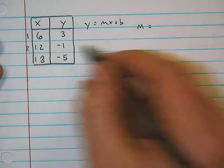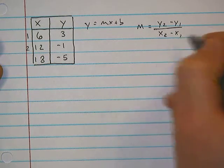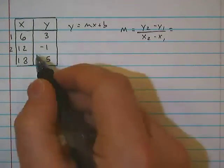M is equal to - I'm going to say that this is my first point and that's my second point. So it's y2 minus y1 over x2 minus x1. So I'm going to substitute in.